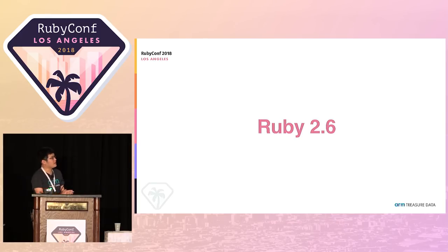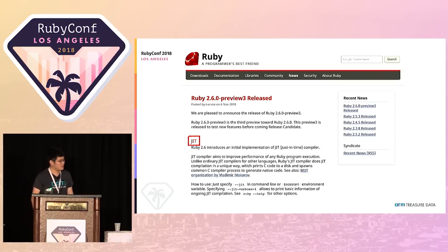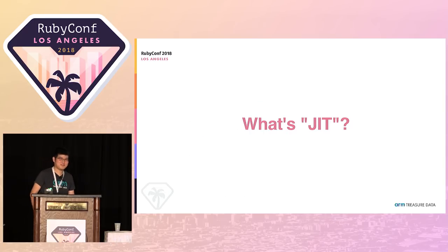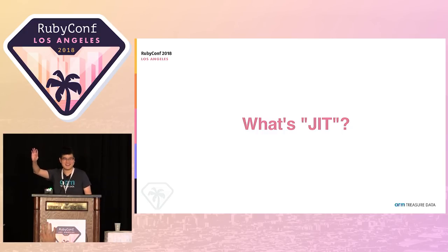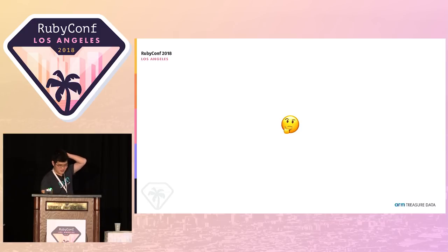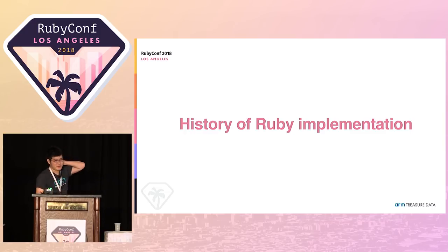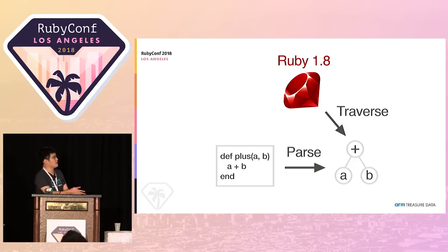This talk is all about Ruby 2.6, and the Ruby 2.6.0 Preview 3 release notes include a JIT Compiler. What is JIT? It's a variation of just-in-time plus compiler. To explain it, I'll cover the history of Ruby implementation. Historically, Ruby 1.8 parsed Ruby code into a tree called an abstract syntax tree — for example, a plus with a local variable A on the left and B on the right — and traversed that tree each time.